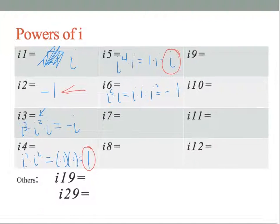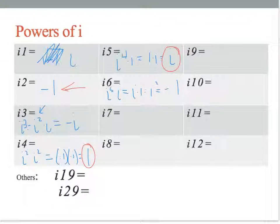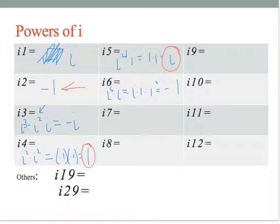They cycle through: i, negative 1, negative i, 1 — then i, negative 1, negative i, 1 — and so on forever.